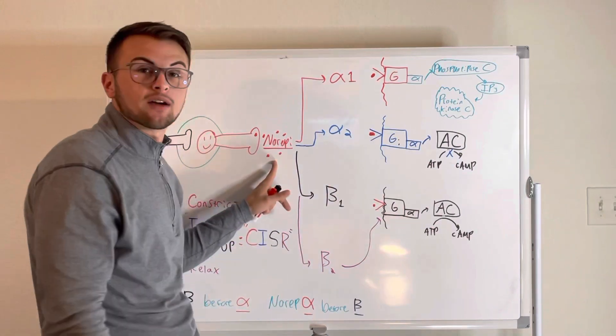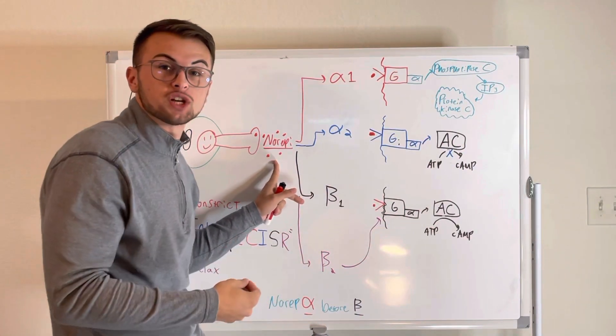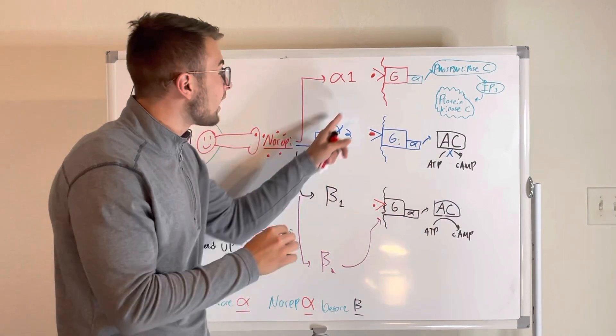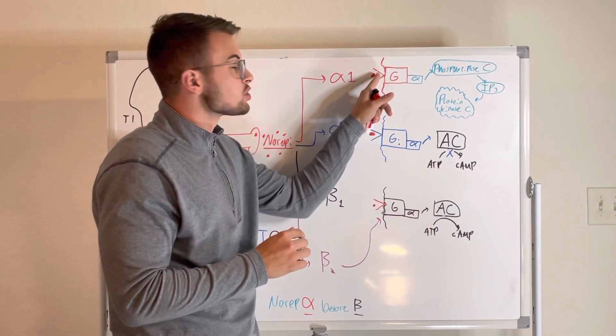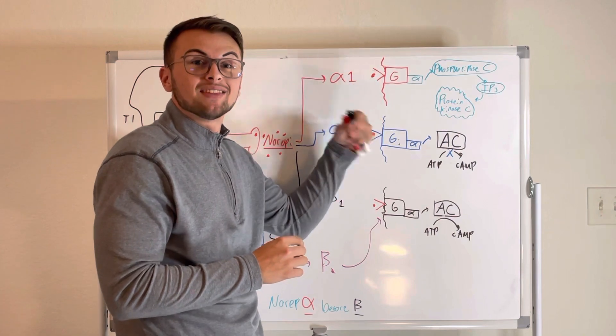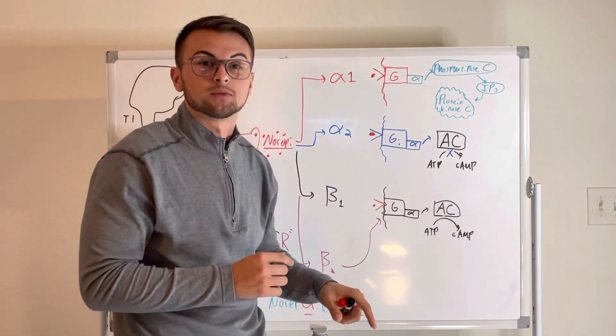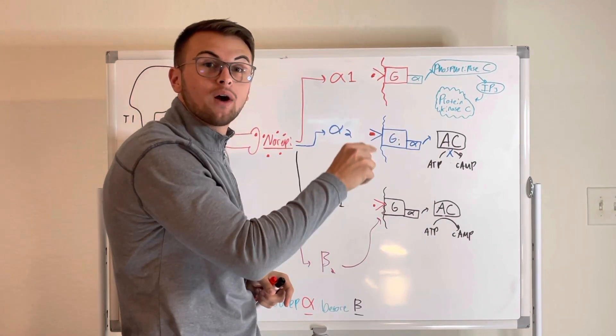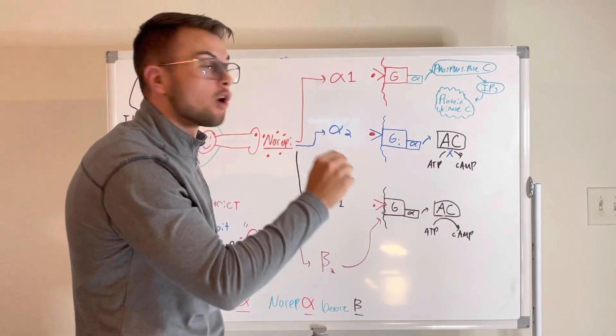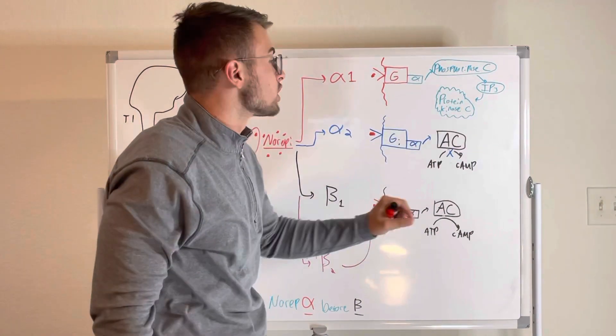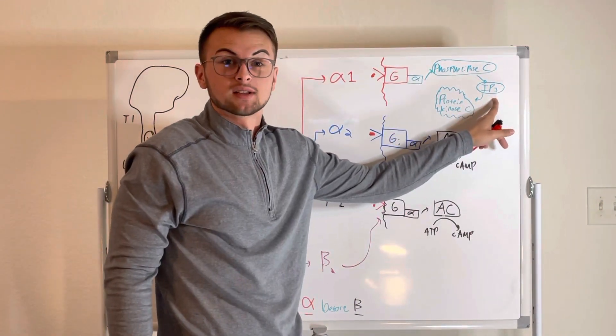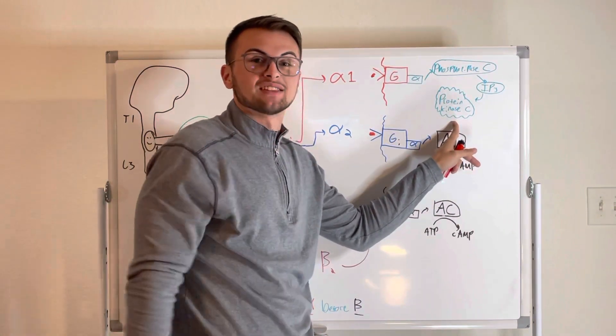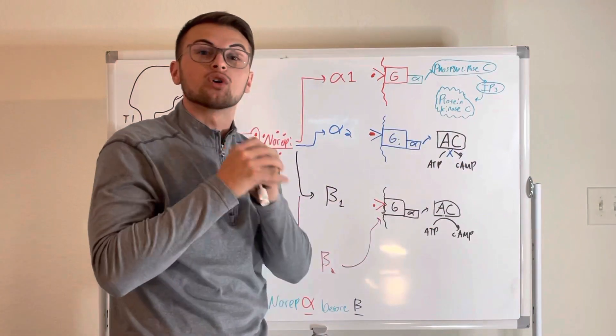Well, first, norepinephrine is released from our postganglionic neurons' axon varicosities. This norepinephrine will bind to the outer portion of our G protein, the outer portion of our alpha-1 receptor. This activated G protein will then go and activate an enzyme called phospholipase C. This will generate more IP3 substance, which will activate protein kinase C, which will cause an action inside the cell. Specifically, it will constrict.